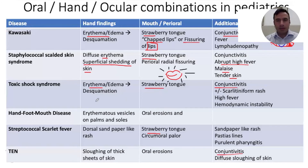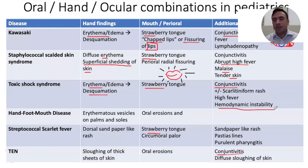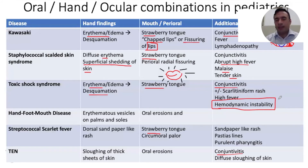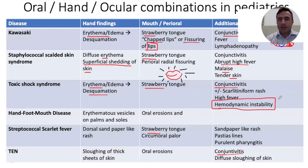Toxic shock syndrome is mediated by superantigen production from staphylococcal species. Although it causes erythema, edema, late desquamation, and strawberry tongue, the most prominent distinguishing feature is hemodynamic instability. It's also less common in this age group — it has been classically associated with tampon use and nasal packing, neither of which is used in the pediatric population.